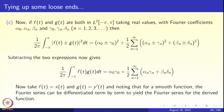The next thing to clarify is the Parseval formula. Let f and g be in L²(−π, π), assumed real valued. Let f have Fourier coefficients α₀, αₙ, βₙ — so f = α₀ + Σ(αₙ cos nx + βₙ sin nx) — and g have coefficients γ₀, γₙ, δₙ. The Fourier coefficients for f + g are αₙ + γₙ and βₙ + δₙ, and for f − g they are αₙ − γₙ and βₙ − δₙ.